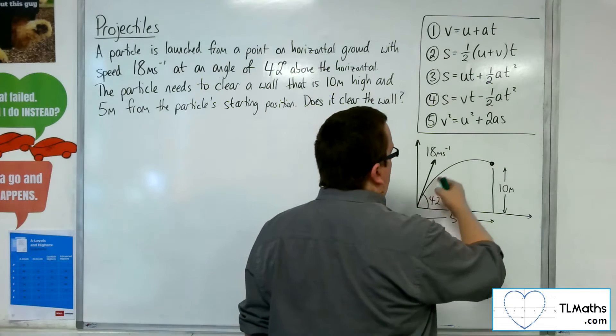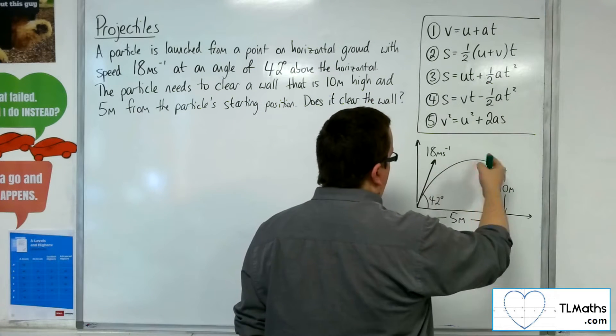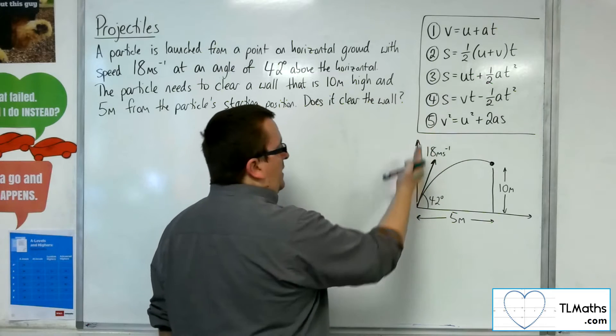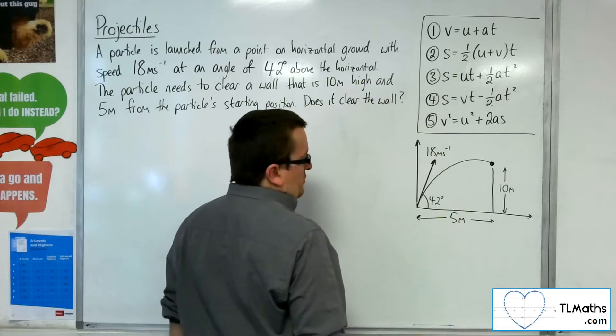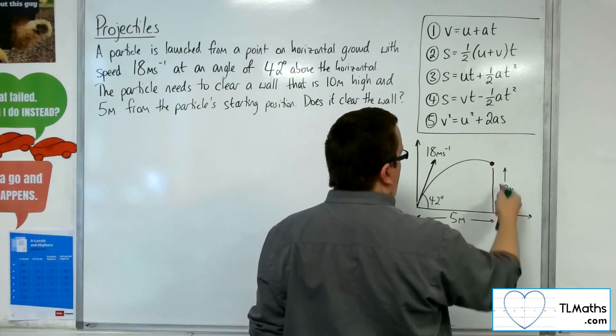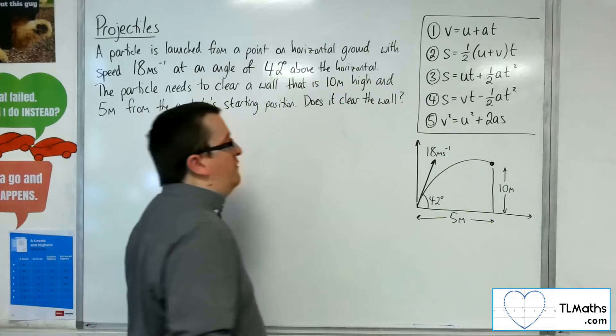So here is the trajectory of the particle, starting off at 18 metres per second as its initial speed at an angle of 42 degrees to the horizontal. Here is the wall that is 10 metres high and 5 metres away from the starting position.